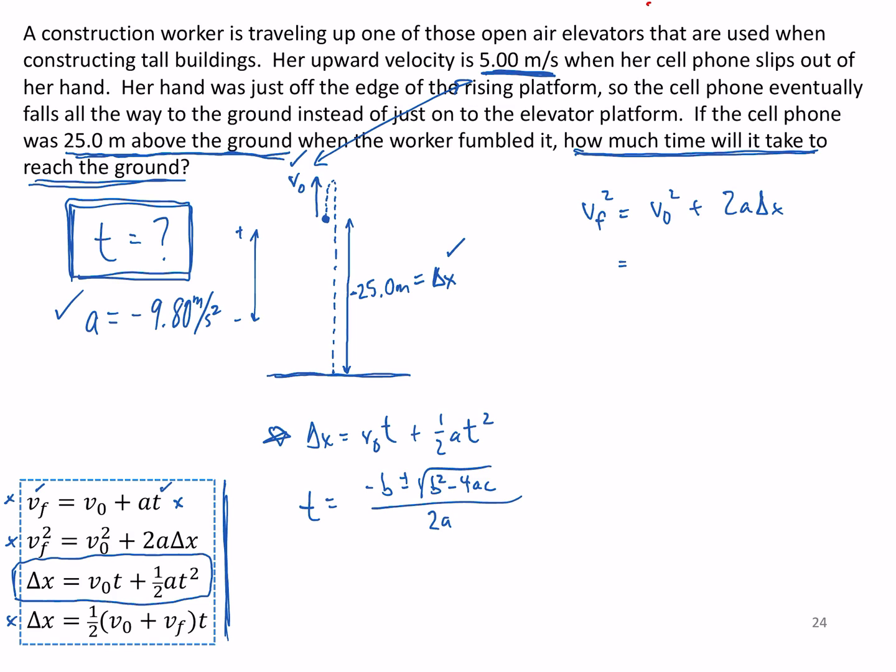So we can put all of that in. All right, it's five squared, we'll get two, negative 9.8, negative 25 meters.